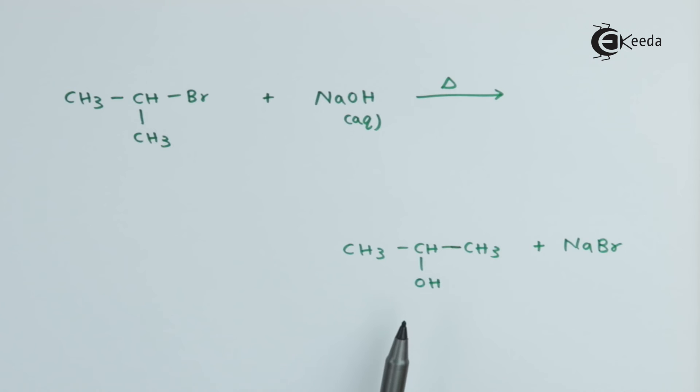Therefore, this is a substitution reaction that has taken place here, and that is how we have got isopropyl alcohol. In terms of IUPAC naming, it would be called propan-2-ol.